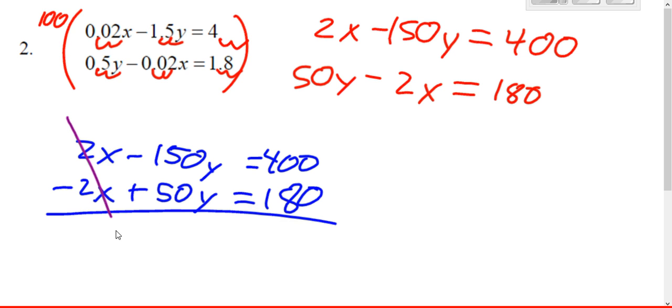We can cancel our x's. We get negative 100y equals 580. Divide and you get y equals negative, divide by 100 is 5.8.